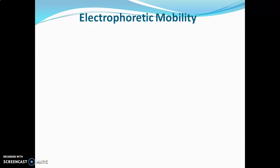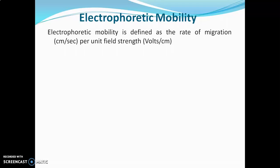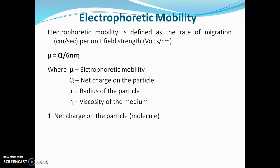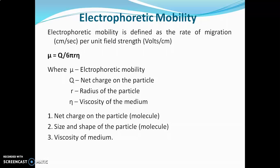Now we will move towards electrophoretic mobility. Electrophoretic mobility is defined as rate of migration of particles per unit field strength, where particles means solute particles or solute molecules. Electrophoretic mobility is given by the formula: mu equals q upon 6 pi r n, where mu is electrophoretic mobility, q is net charge on the particle, r is radius of the particle, and n is viscosity of medium. Net charge, size and shape of the particle, and viscosity of medium are the three important factors affecting electrophoretic mobility.